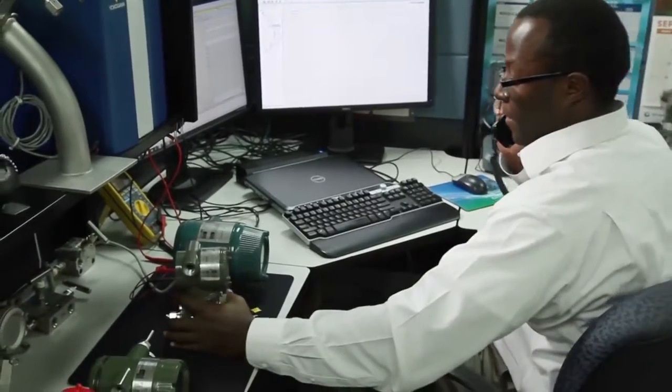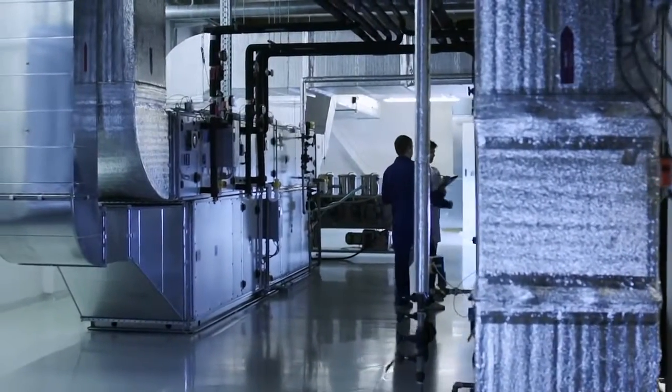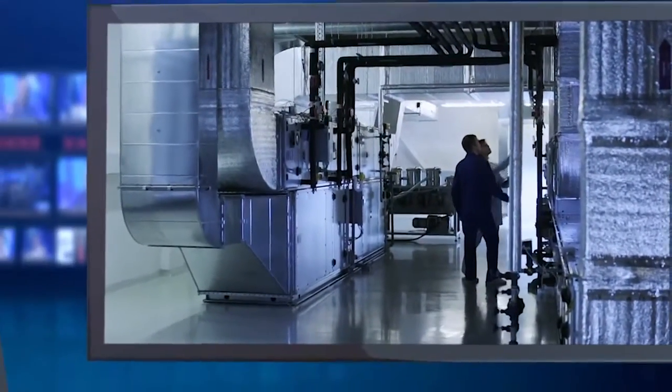Typically, calibration of an instrument involves checking several points throughout the range of an instrument. Once the accuracy of the device has been tested, adjustments can be made to bring it within tolerance.